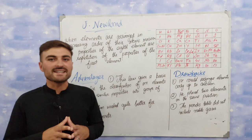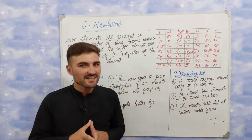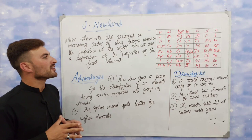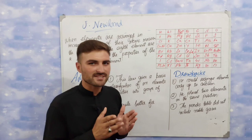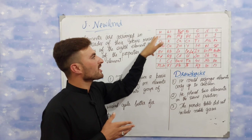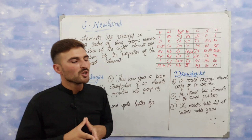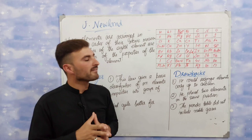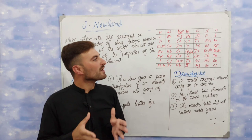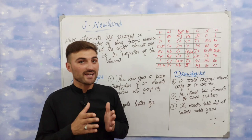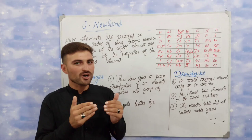What did he do? He said that when elements are arranged in increasing order of their atomic masses, going from left side to the right side, the atomic masses of the elements will get increased. For example, going from Lithium having atomic mass 7, Beryllium having 9, Boron having 11, Carbon having 12, Nitrogen having 14, Oxygen having 16 — this is the increasing order of atomic masses.